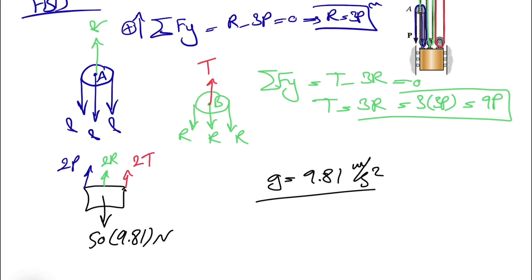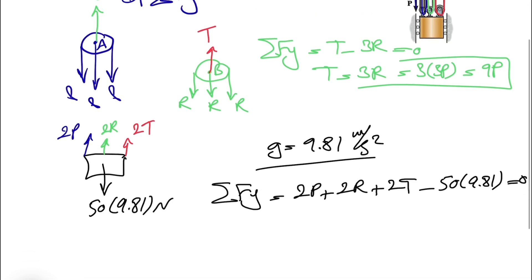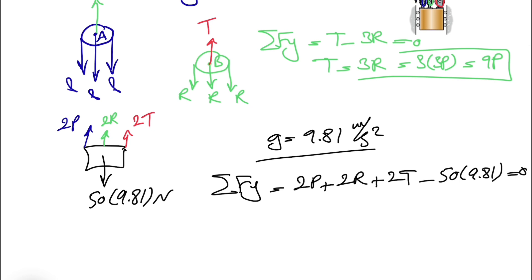All we need to do in here is just do our equilibrium equation for Y again. We have 2P plus 2R plus 2T minus the mass, which is 50 times 9.81 equals 0. We know each of these forces, R and T, based on P.